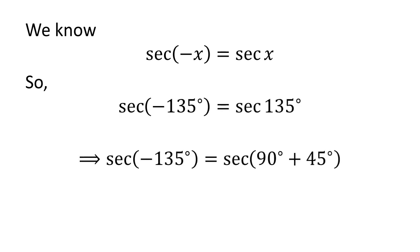As we know, the trigonometry identity secant of minus x is equal to secant of x. The video explaining how to derive this identity is appearing in the upper right corner, and the URL address has been mentioned in the description section.